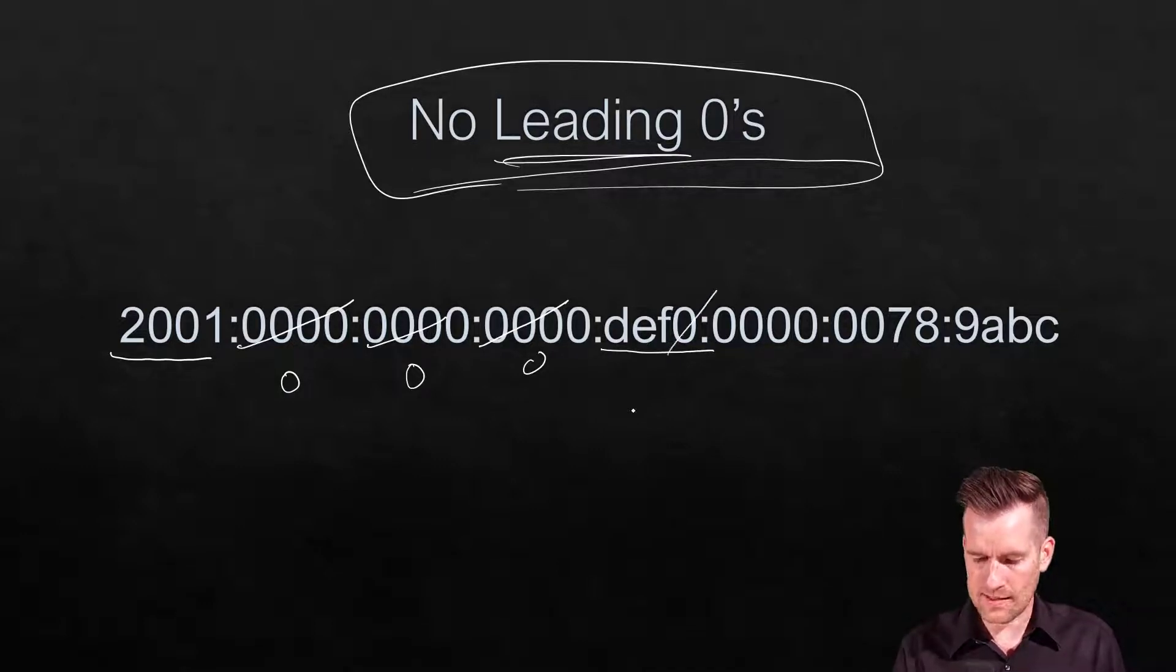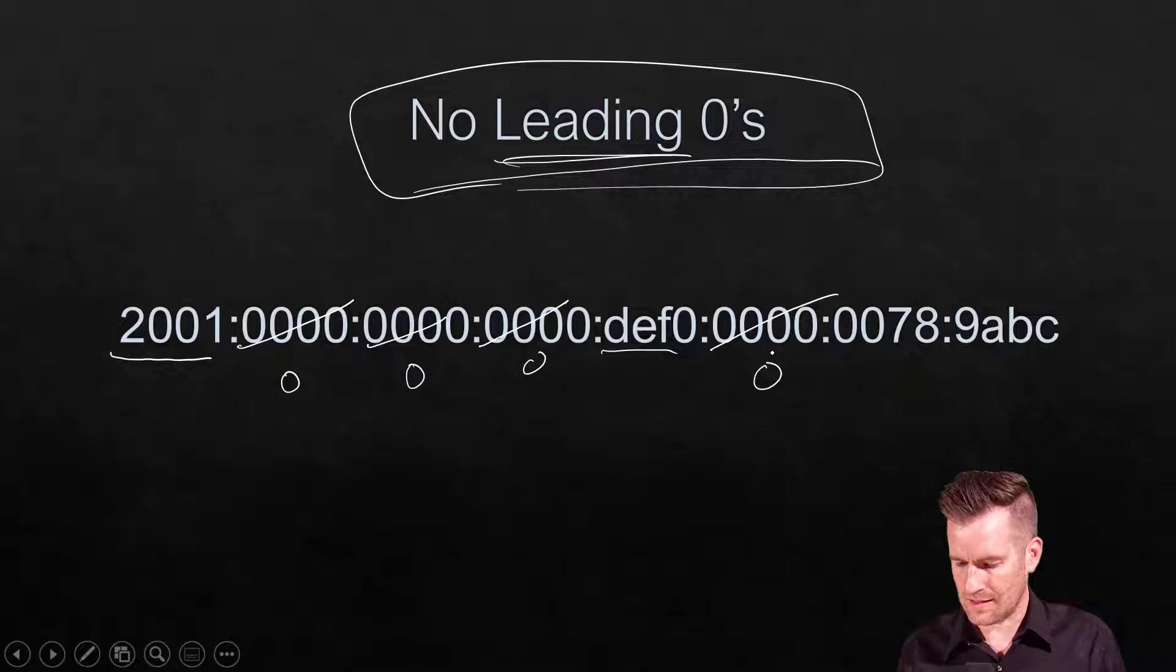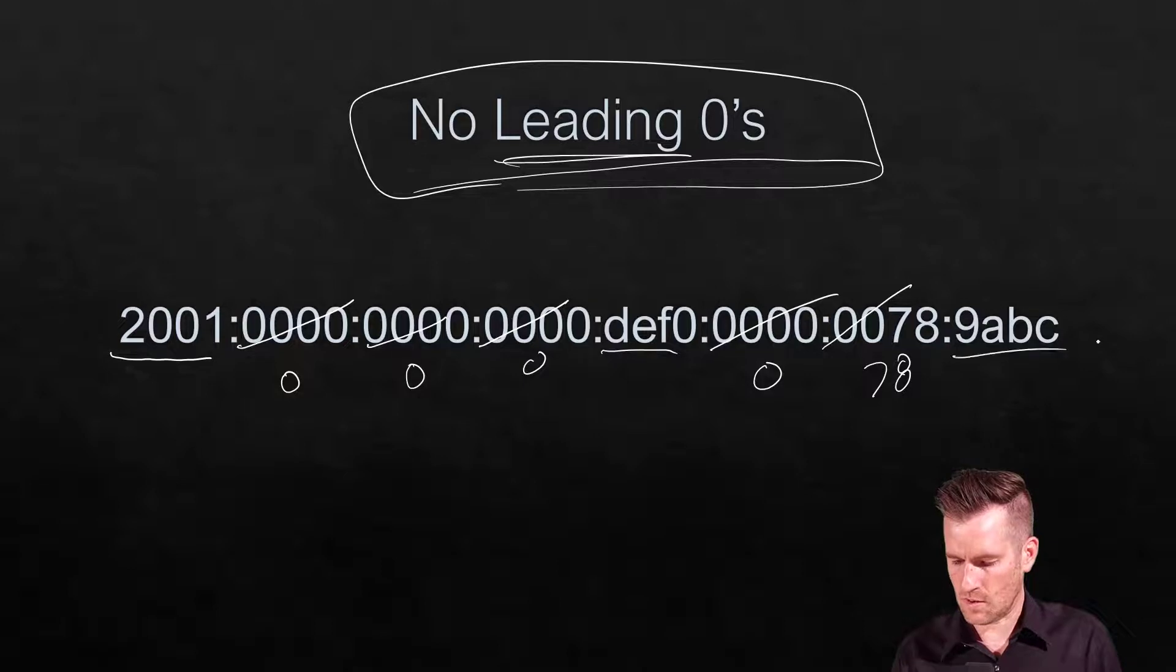Some hextets don't have leading zeros. If a zero is in the middle or end, we can't remove it - the machine would assume the zero is up front. We can only remove leading zeros. That's the rule for cutting out leading zeros.